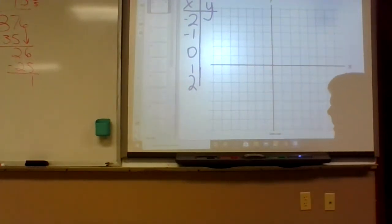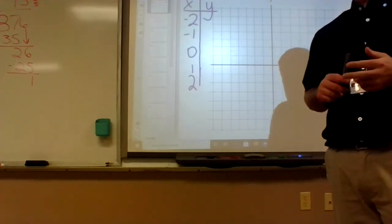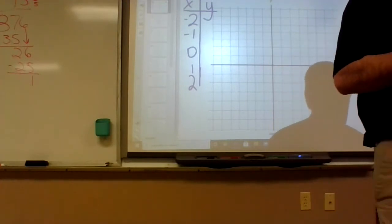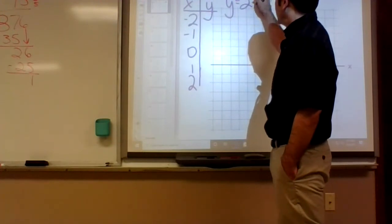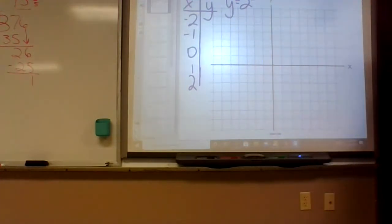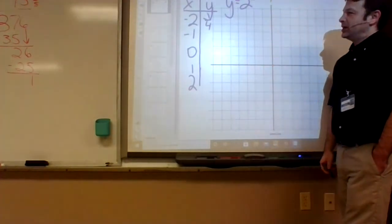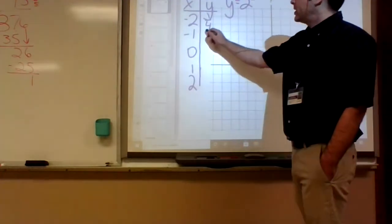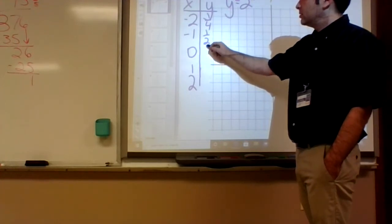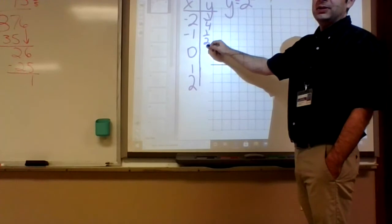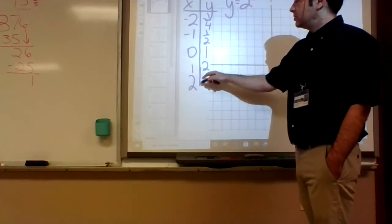What's 2 to the negative 2? Well, 2 squared is 4, and a negative exponent inverts it, so it's 1 over 4, which is one-fourth. What's 2 to the negative 1? One-half. What's 2 to the zero? Anything to the zero is 1. 2 to the 1 is 2, and 2 to the 2 is 4.